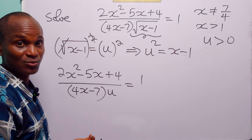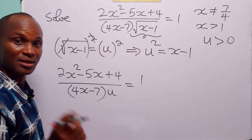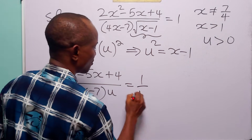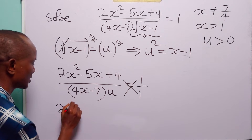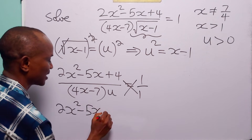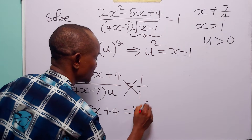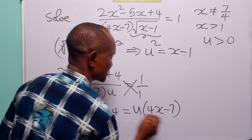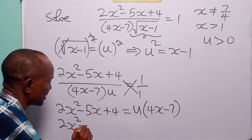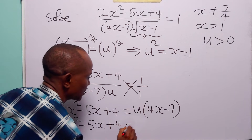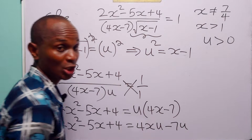The next thing we are going to do is to get rid of this fraction on the left-hand side of the equation by cross-multiplying. When we cross multiply, we have that 2x squared minus 5x plus 4 is equal to u times 4x minus 7. When we open this bracket, we have that 2x squared minus 5x plus 4 is equal to 4xu minus 7u.